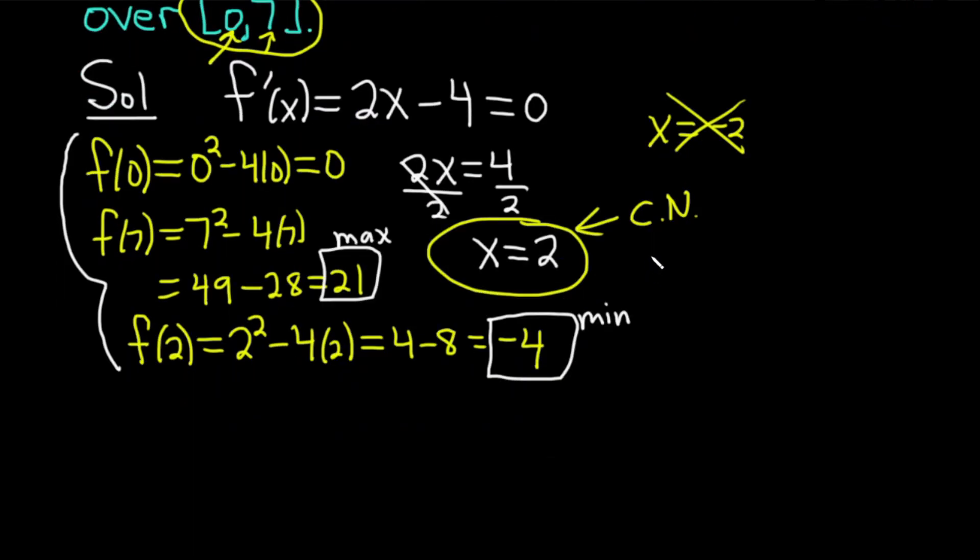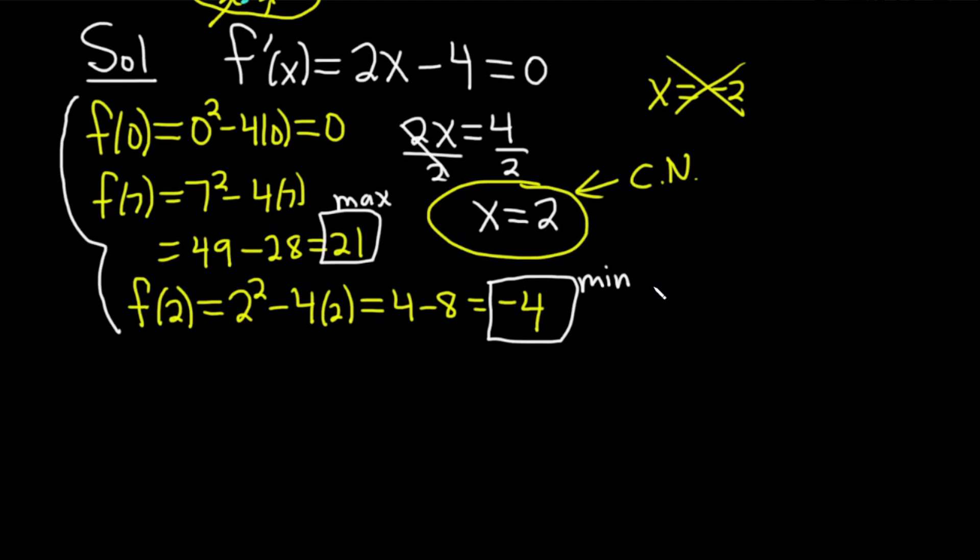Another word of caution, and this really just has to do with what textbook you're using. A lot of textbooks will want the ordered pair. So in that case, you would say max at (7, 21). So that's the x and that's the y. And again, it depends on the book. A lot of online homework systems want the answers this way, I've noticed. And the min would be at (2, -4).